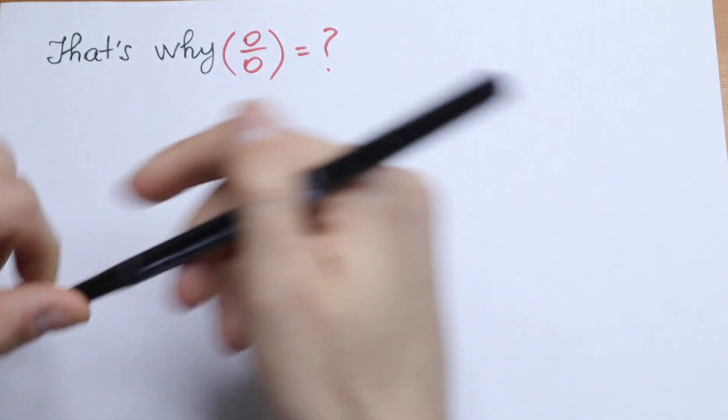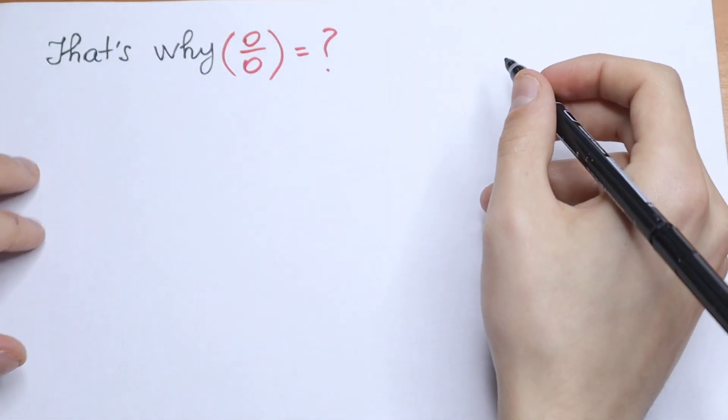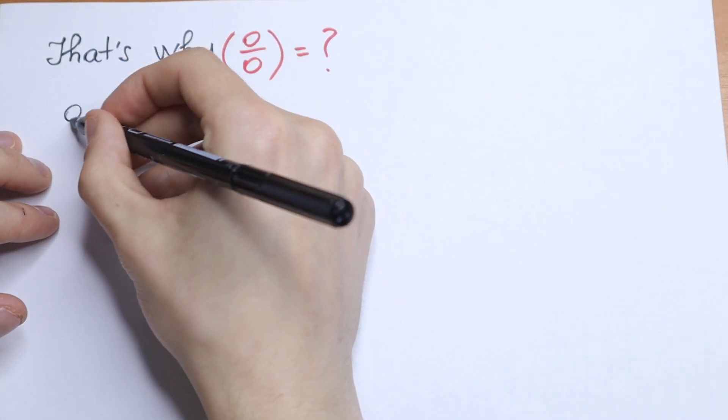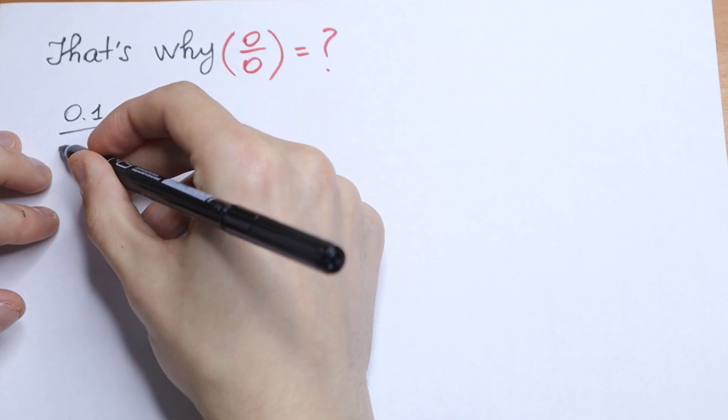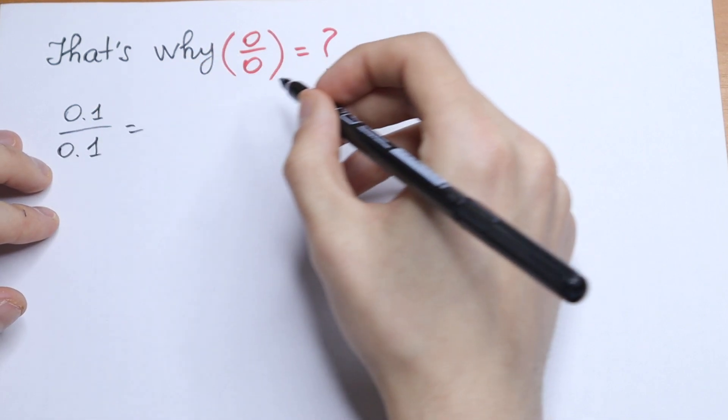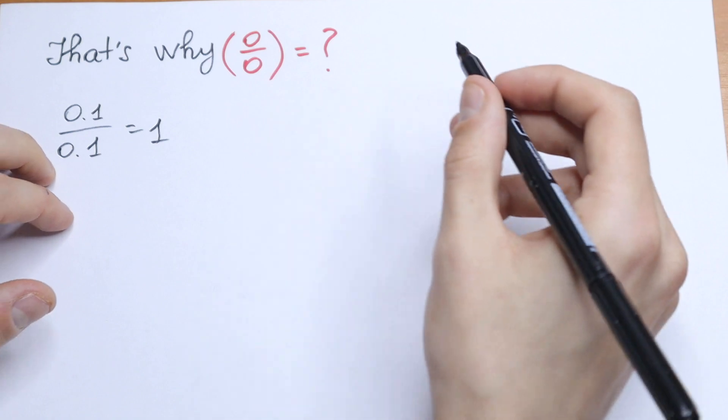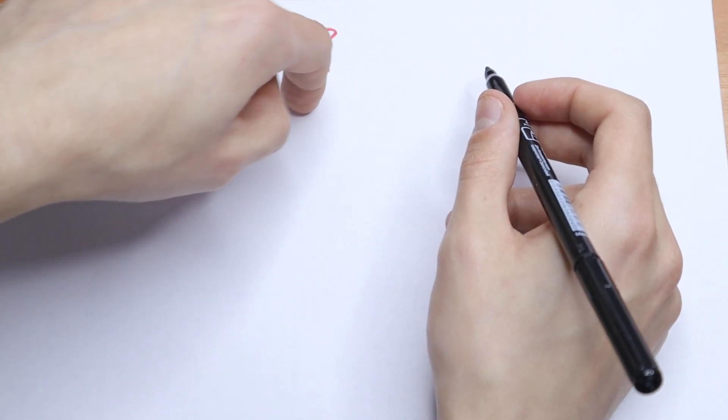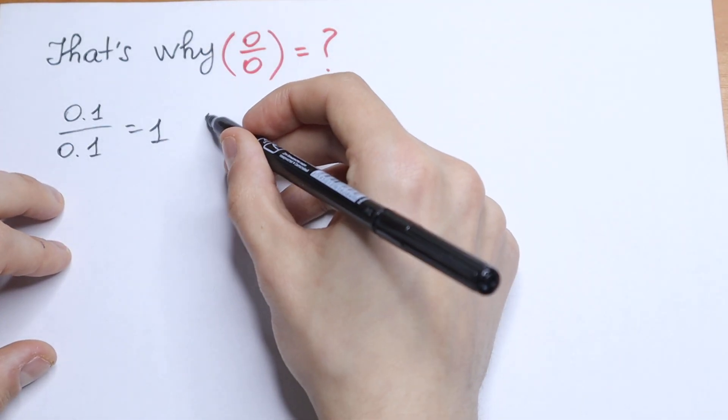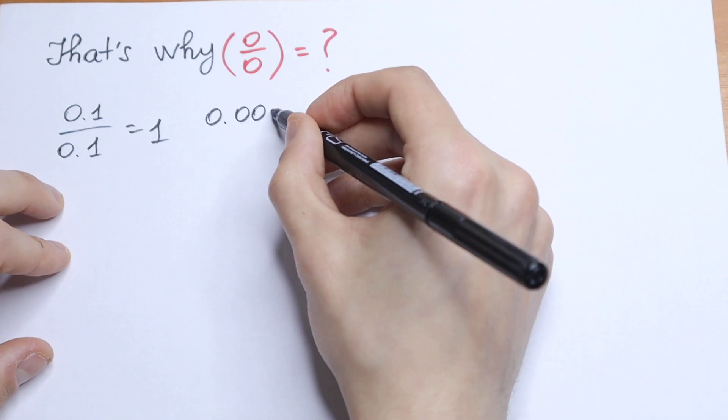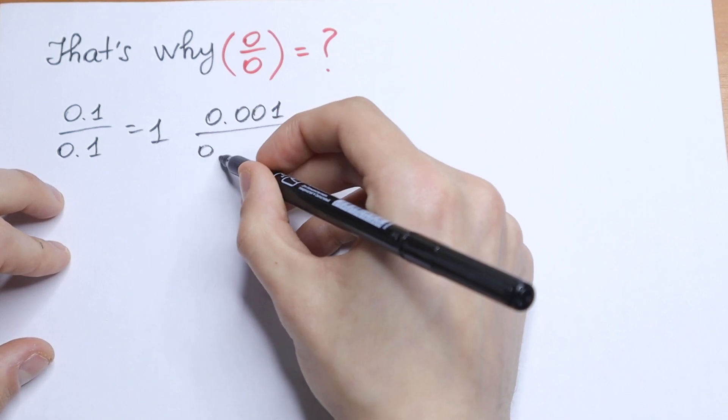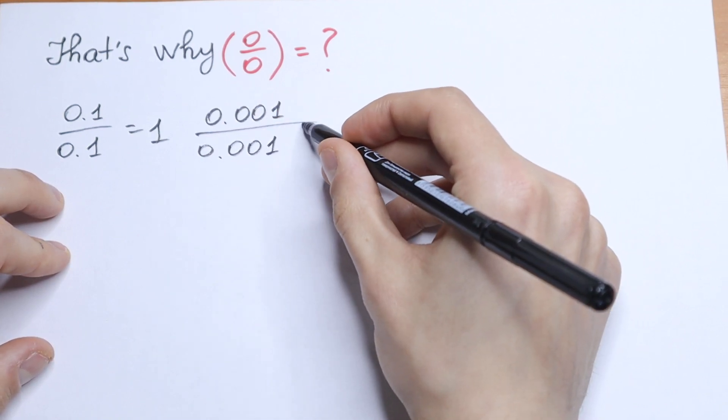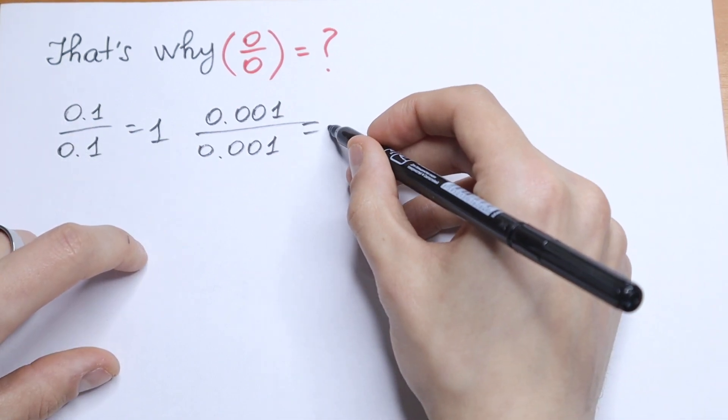So let's get in closer and closer to this 0. Take a look, if we divide 0.1 by 0.1, what we will have? As a result we will have 1. So let's get in closer and closer to this 0. Let's divide 0.001 over the same 0.001. We will have as a result, as you can see, we will have 1.